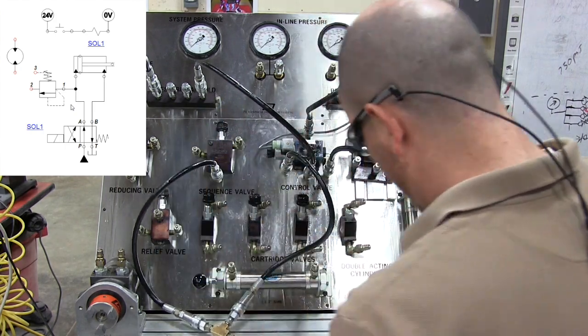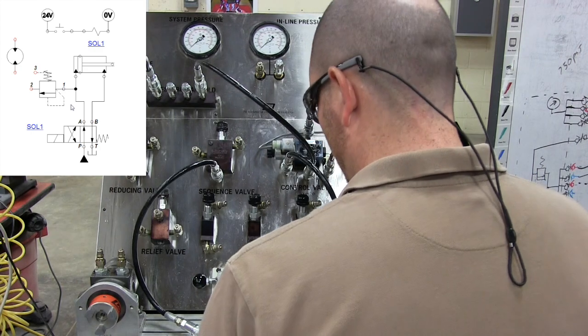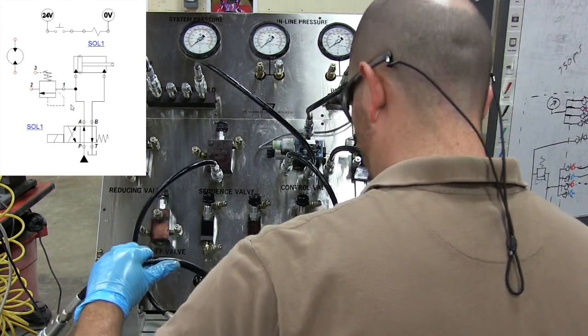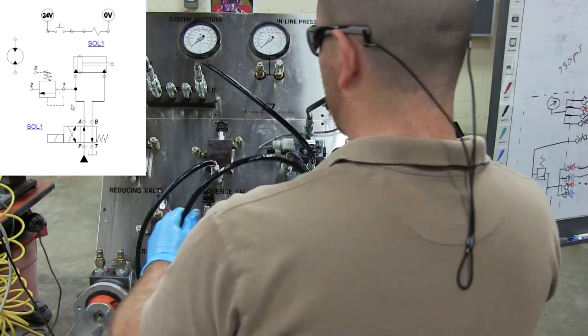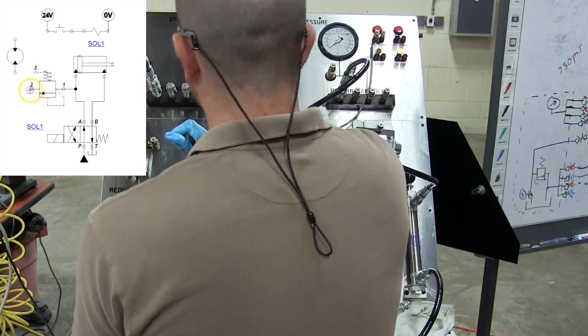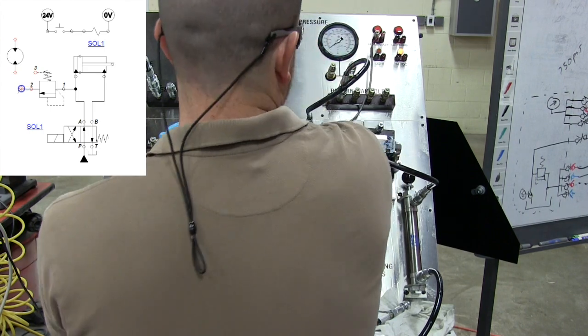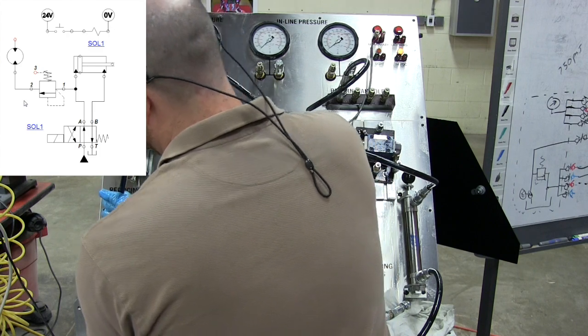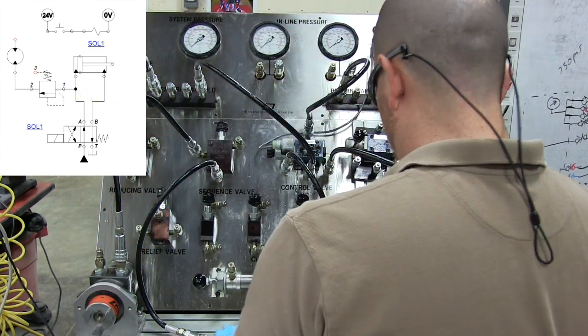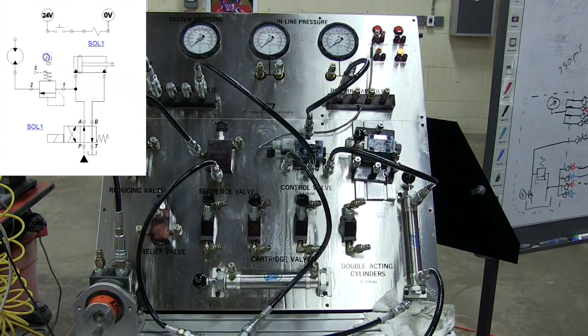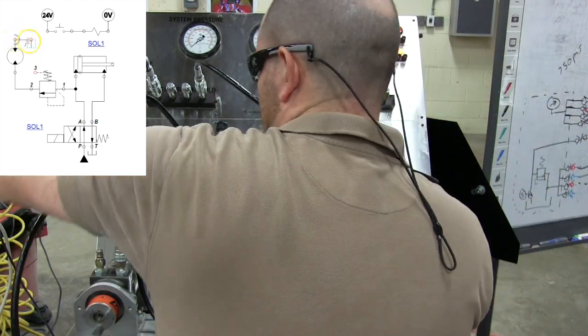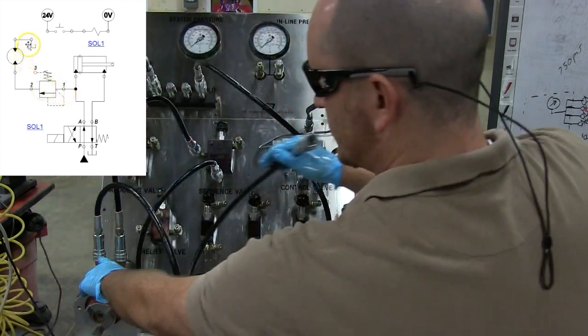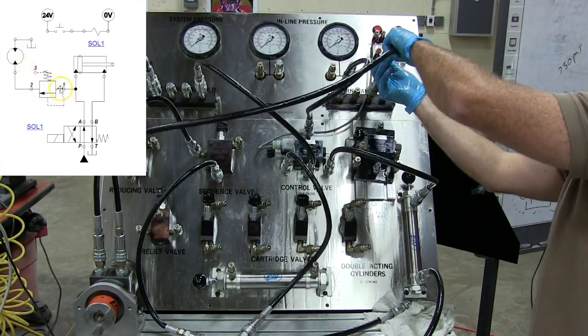Then what we're going to do is grab a couple extra hoses here. We're going to come from our output of our sequence valve down to our motor, our hydraulic motor. And then from our motor, we need to go all the way back to tank. This is going to be a really long hose. So we're going to connect to our motor, back up to tank.